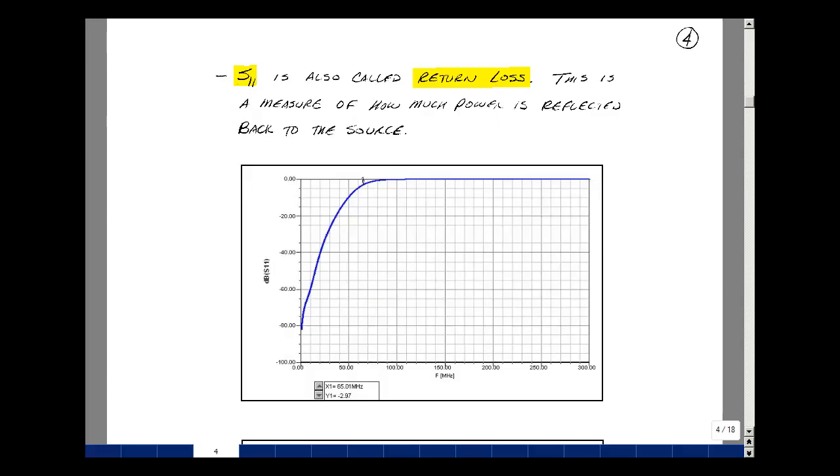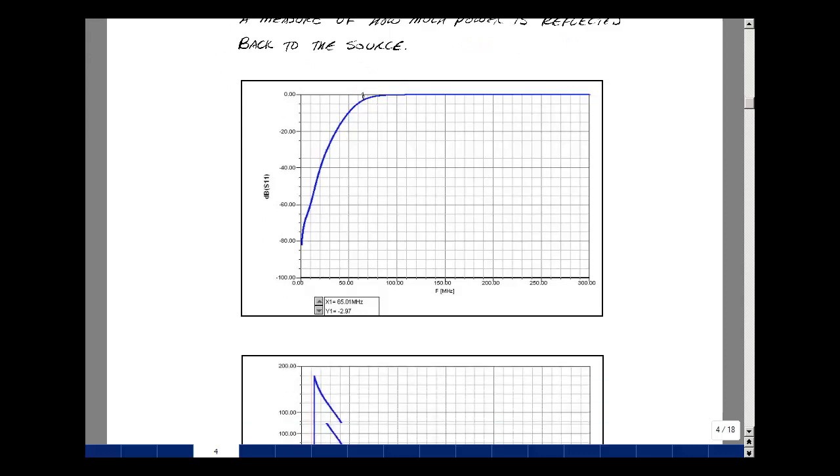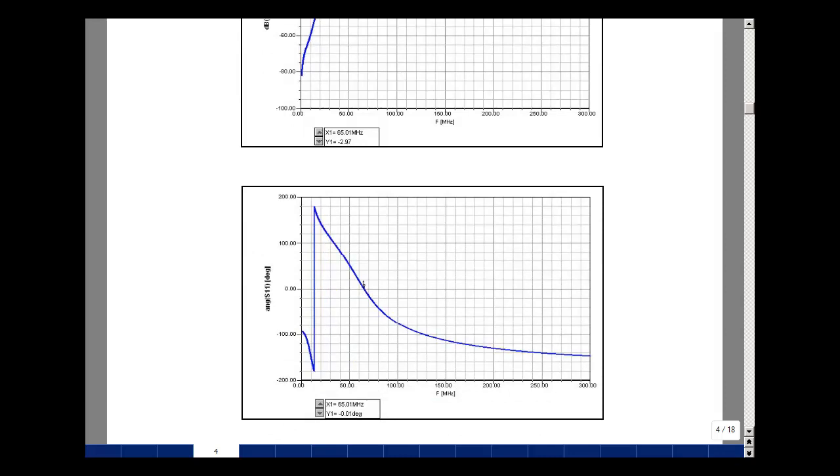Another S parameter we're going to plot in lab is S1,1. It's also called return loss. It's a measure of how much power is reflected back to the source. Here I've marked the 65 megahertz point. And here's the magnitude of S1,1. You should see similar plots on the network analyzer.